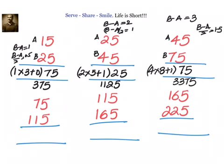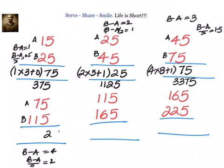We have 75 into 115. Here a equals 7 and b equals 11. B minus A equals 4, and b minus a by 2 equals 2, a perfect integer. Since b minus a is even, the right-hand side is 25. Left-hand side: 7 into 11 plus 1 equals 7 into 12, plus b minus a by 2 which is 2. That gives 84 plus 2 equals 86. The answer is 8625.